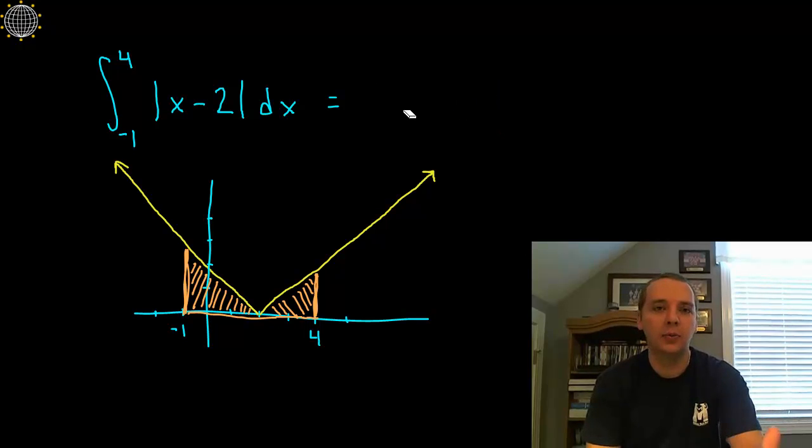And so I think we'll see the answer to this if we actually think of this graphically here for a minute. So here's the absolute value of x minus 2, which is the absolute value of x shifted to the right 2 units. Alright and then we're integrating from minus 1 to 4, so I want to find this defined area here.